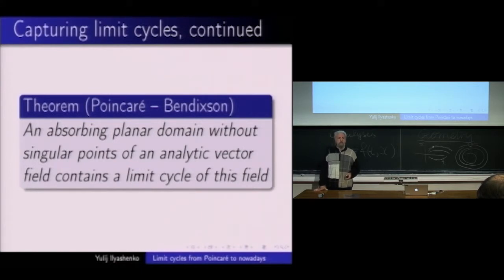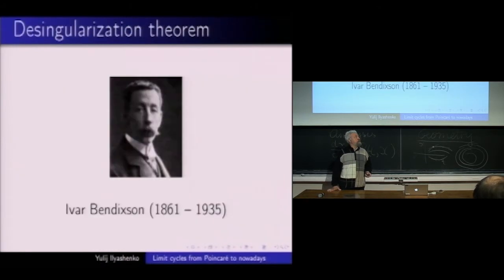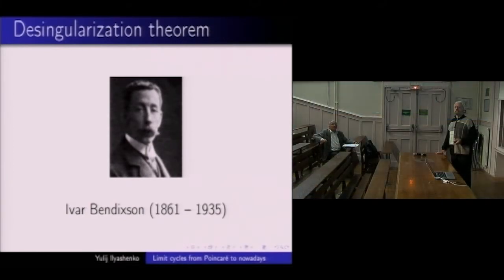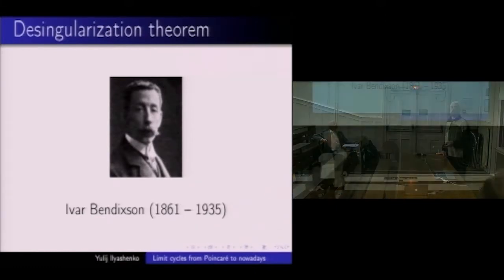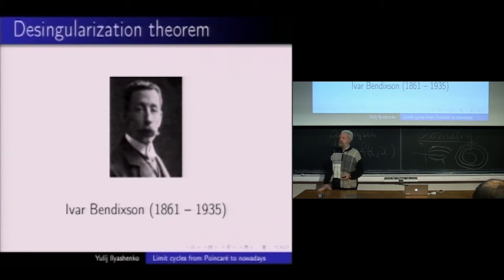As limit cycles are very important, then a hunt for limit cycles makes sense. And Poincaré made the first steps in this direction. He considered a domain, an annulus, in which the vector field in the plane is pointing inward. And no singular points are allowed in this domain. Poincaré claims that there is a closed orbit inside such a domain. This theorem is called Poincaré-Bendixson theorem.